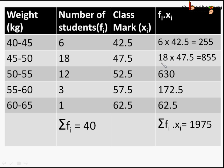And we find the product of frequency f₂ and observation x₂, that will be equal to 18 × 47.5, which is equal to 855. And so on for each row in the table.